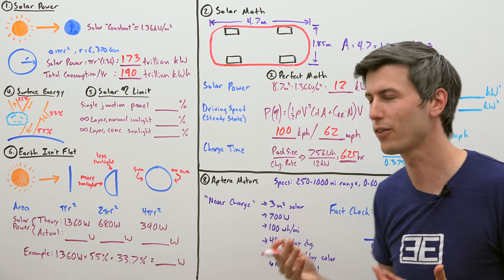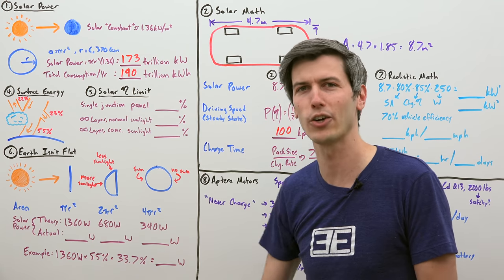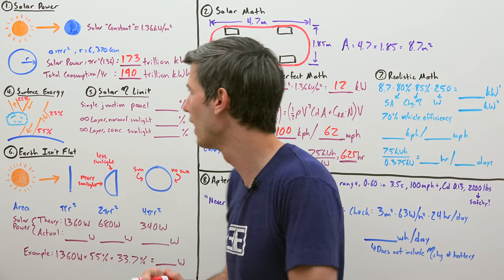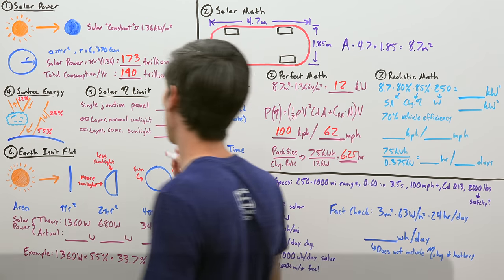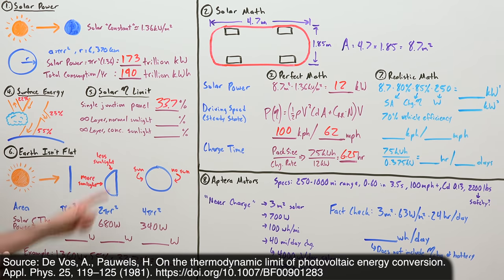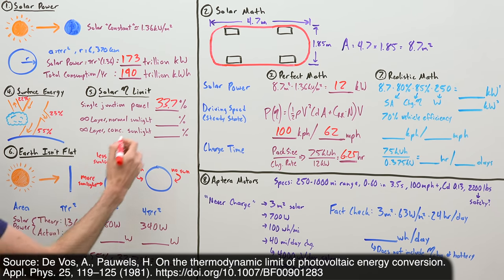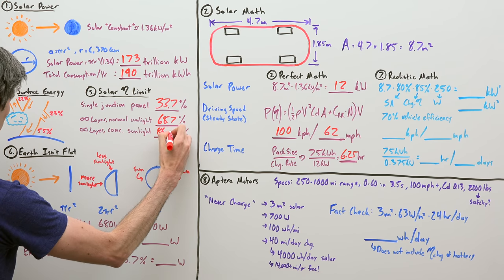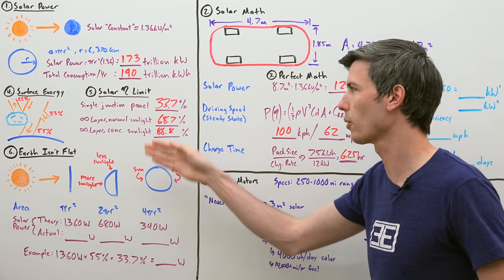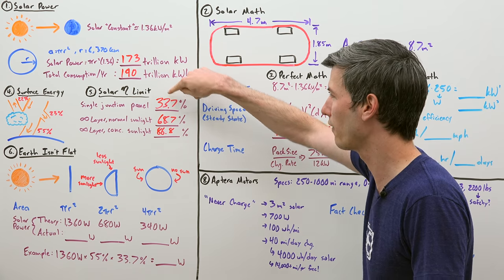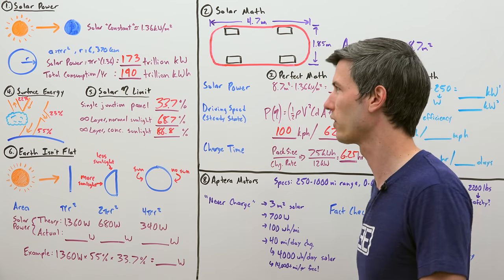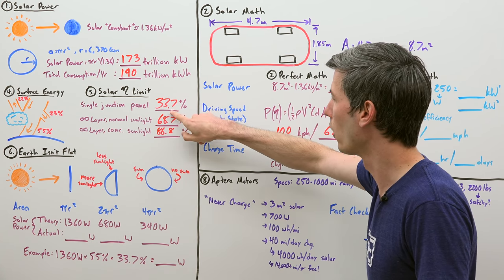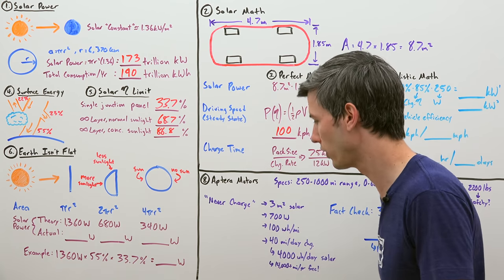So we've only got 55% of that 1.36 to actually use. And then solar panels actually have theoretical limits in efficiency as well. The theoretical efficiency limit of a single junction, meaning a single layer solar panel, the common ones that you see on houses, the theoretical limit for those is about 33.7% efficient. If you were to have infinite layers with normal sunlight, that theoretical efficiency goes to 68.7. And if you were able to concentrate that sunlight with infinite layers, you'd get 86.8%. So for the purposes of this video, we're going to say we're going to have a single layer solar panel that we're going to be using on our car, meaning we have a maximum efficiency possible of 33.7%.